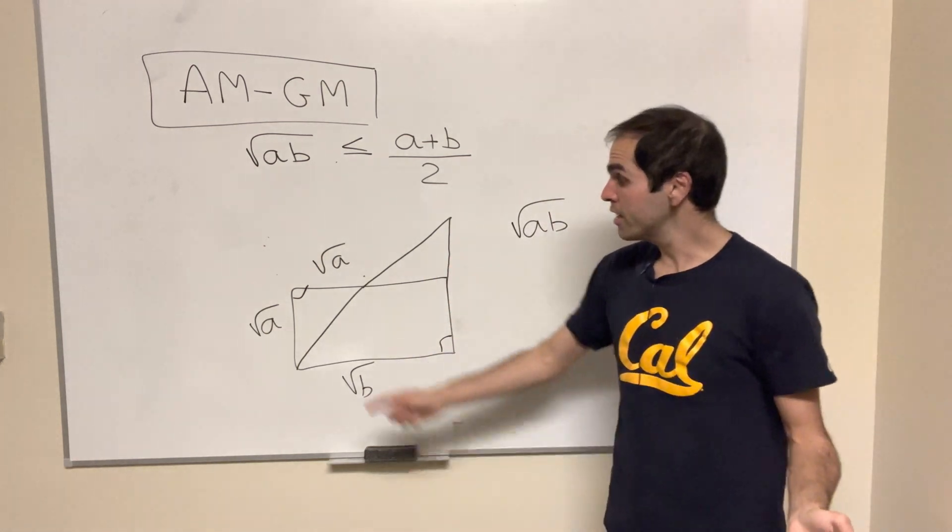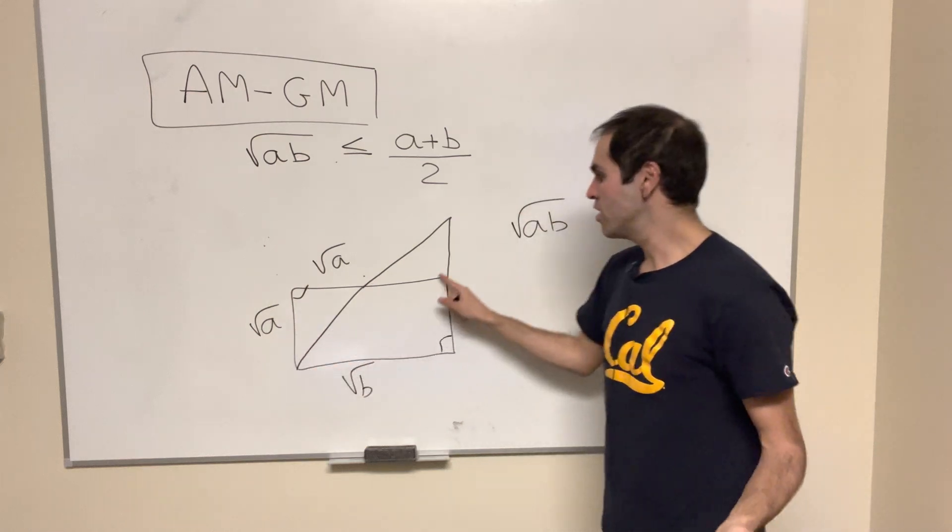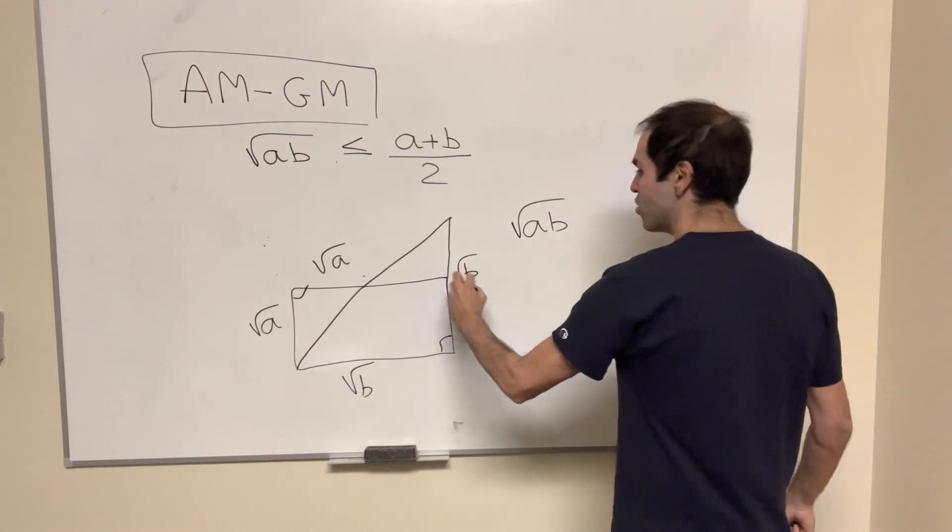Therefore, they are congruent. Since this side is square root of a, this big side is also square root of b.